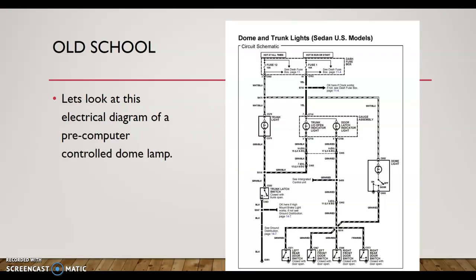So if we take a look at this old-school schematic, basically pre-computer-controlled dome lamp or ceiling light, whatever you want to call it. There's trunk lights in here, the gauge assembly light here, various different switches. Basically what I want to look at is a schematic without transistors. Do you see transistors in here? Do you see computer-controlled devices? Nope. This is pretty much the way of the world for many, many years, and we diagnosed these as mechanics using Ohm's Law. Let me walk through these circuits.